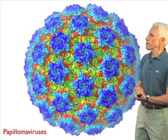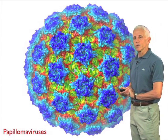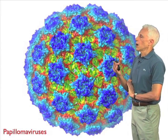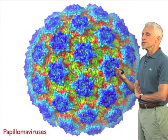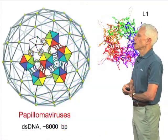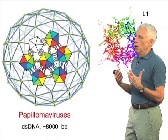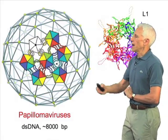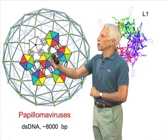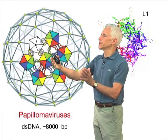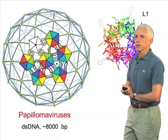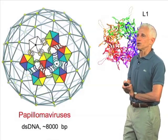This surface representation shows you that these viruses, which package a double-strand DNA genome, are based on an assembly of pentameric building blocks. In this case, the pentameric building blocks are positioned not only at positions of fivefold symmetry in this icosahedral shell, but also at a general non-symmetrical position, so that this pentamer is actually surrounded by six other pentamers — a fivefold peg in a sixfold hole, so to speak.